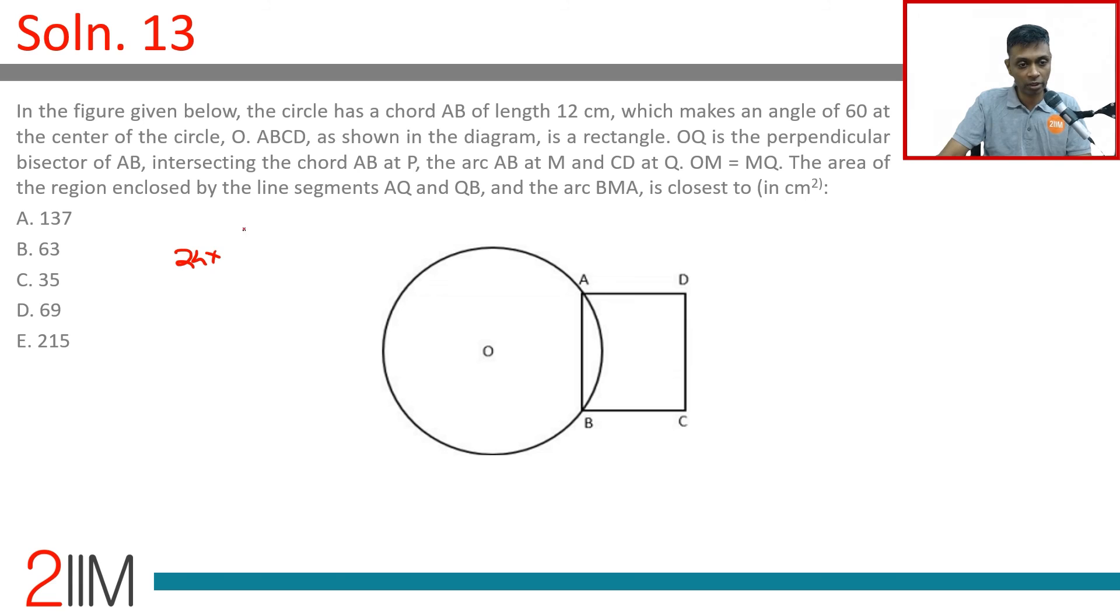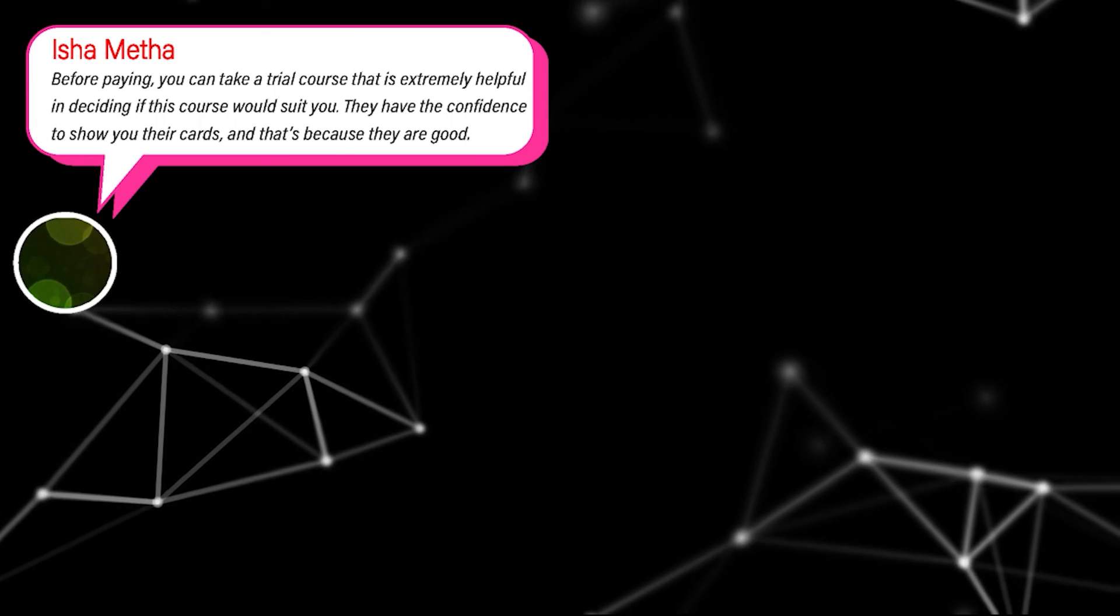24 into 6 minus pi: 24 into 6 minus 3.14, 24 into 2.86. 24 into 3 is 72, 24 into 0.14 is 3 and a half, so 24 into 2.86 is roughly 72 minus 3 and a half, roughly 69. We're looking at 68.4, 68.5, roughly 69 square centimeters. Beautiful question—we need to be very methodical about this.